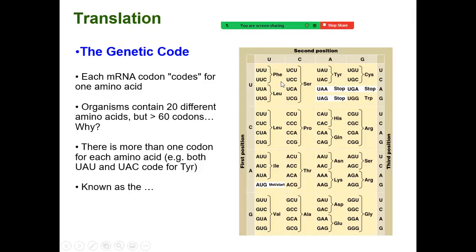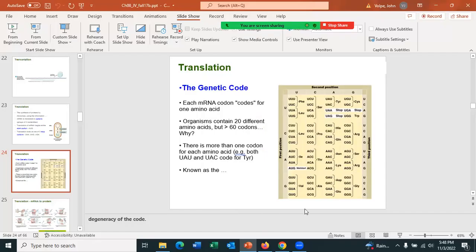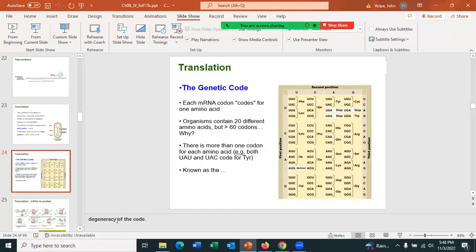This is known as the degeneracy of the genetic code — more than one codon codes for most amino acids. We use the term degenerate rather than redundant in this context. It simply means there's more than one possible codon for most amino acids.